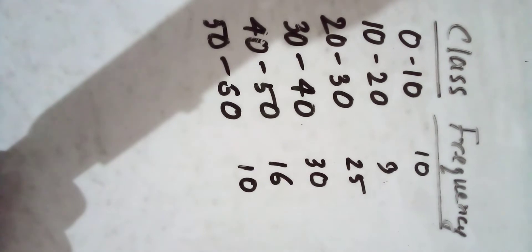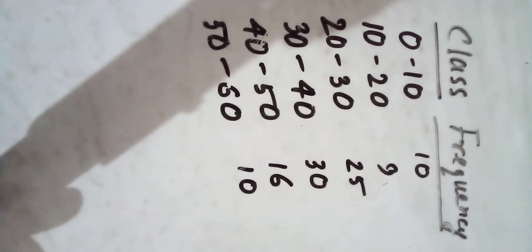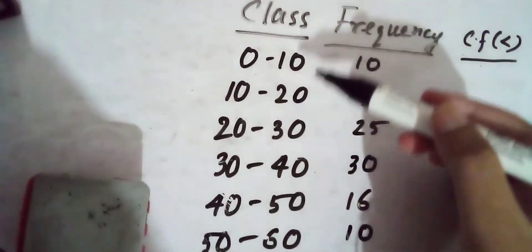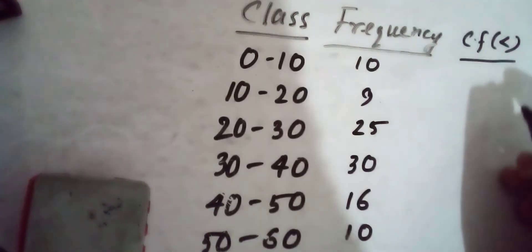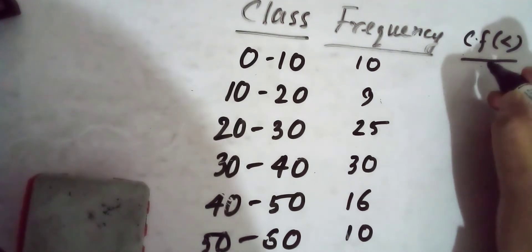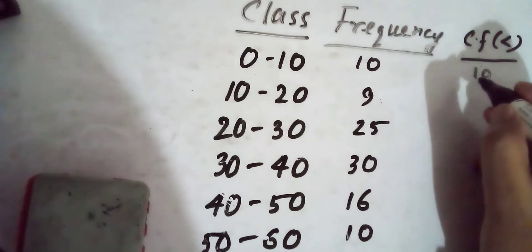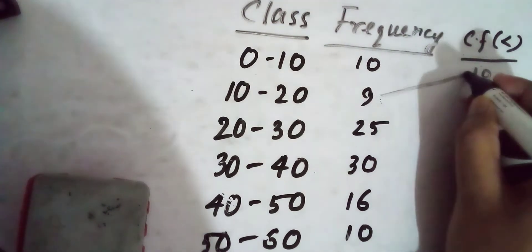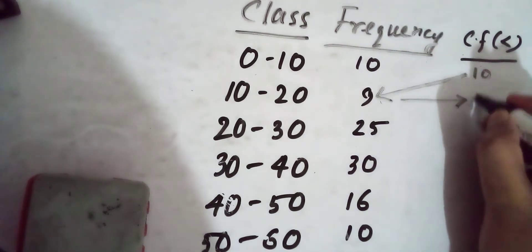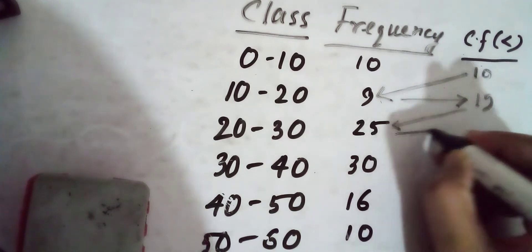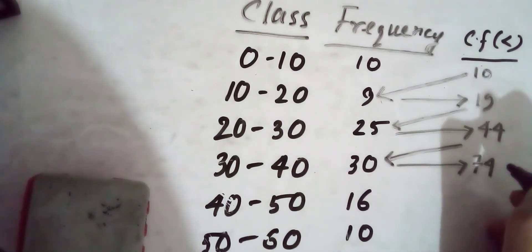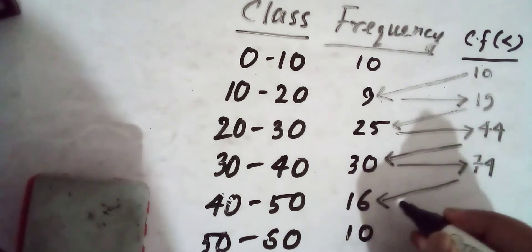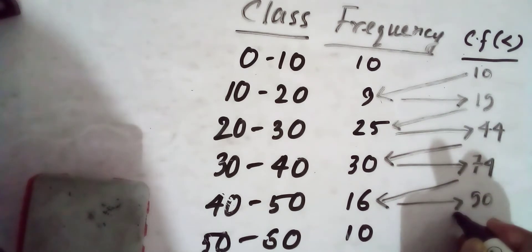We need to calculate the cumulative frequency for this frequency distribution. As we've seen in previous videos, let's calculate the cumulative frequency of the less than type. So we have class intervals, frequency, and now we'll calculate the cumulative frequency.